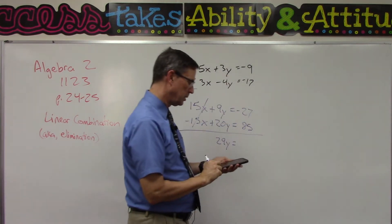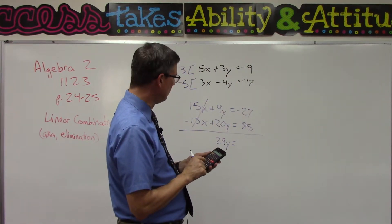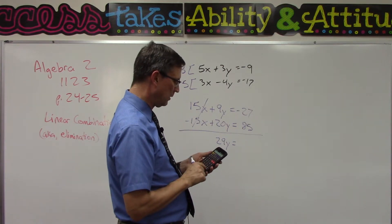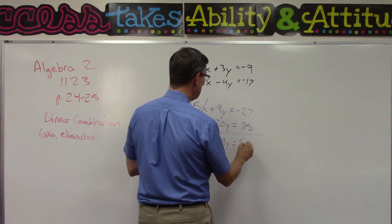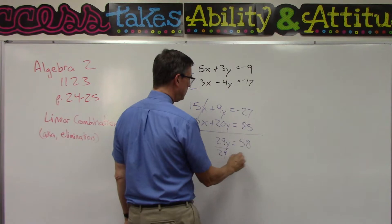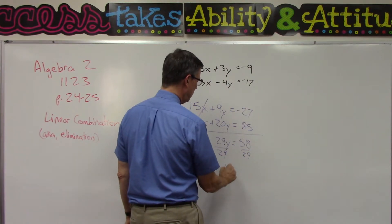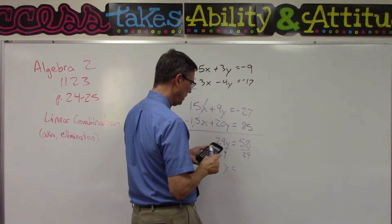I got my calculator, because it's late in the afternoon and my brain is fried. So we're going to add -27 plus 85, and we get 58. Now if we divide by 29... You do it ahead of me too.